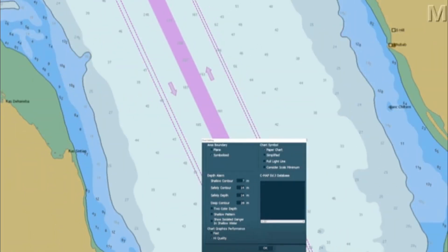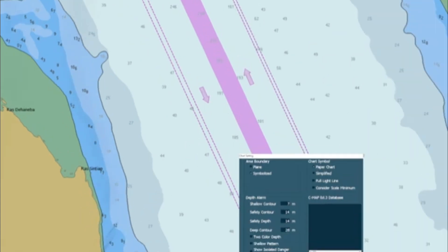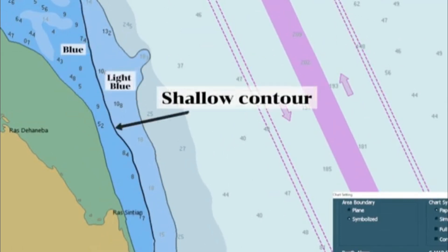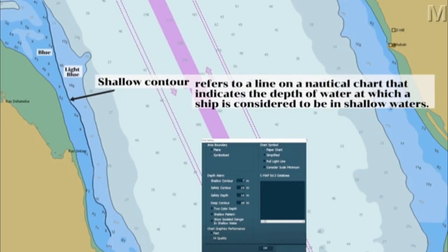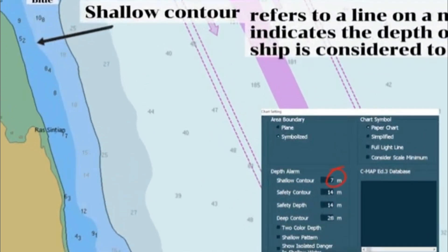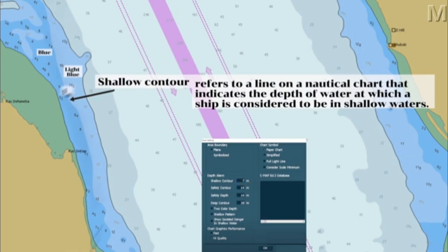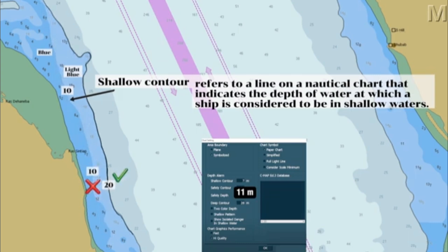I will discuss later in this video how the following values are determined. First, let us interpret the following parameters based on the set values. The contour line between the blue and the light blue is a shallow contour. Shallow contour refers to a line on a nautical chart that indicates the depth at which a ship is considered to be in shallow waters. Ships will never enter beyond the shallow contour into the blue area because there is a high risk of running aground. Since the set value for shallow contour is 7 meters and there are no intermediate contours available, it will always display the available contour higher than the set value — the next available contour higher than 7 meters is 10 meters. The program will never display a contour lesser than the set value. For example, if we set the shallow contour to 11 meters and the available contours are 10–20 meters, a 20-meter contour will be displayed, not the nearest contour which is 10 meters.